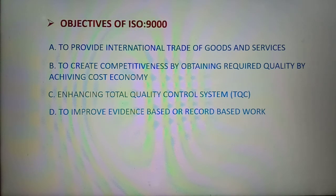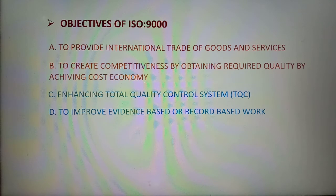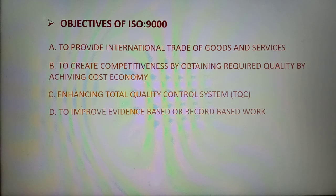Objectives of ISO 9000: First, to provide international trade of goods and services. Second, to create competitiveness by obtaining required quality through achieving cost economy. Third, enhancing total quality control system, that is TQC. And the last objective is to improve evidence-based or record-based work. Thank you.